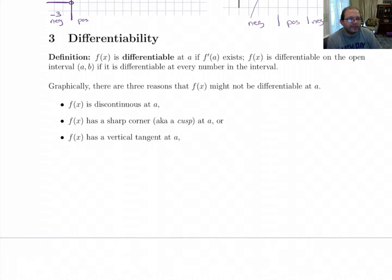We're going to talk about differentiability. If you've got a function f(x), we say it's differentiable at a number a if the derivative exists there. And we say that f(x) is differentiable on an interval, an open interval from a to b, if it's differentiable everywhere inside of that interval.